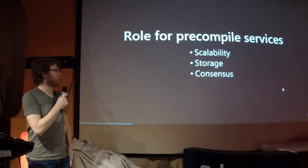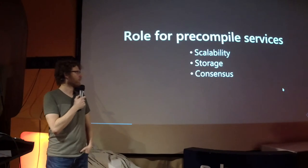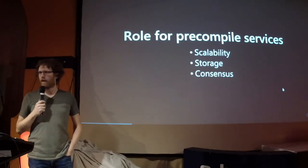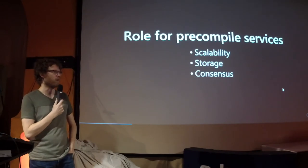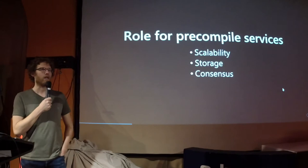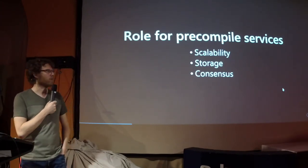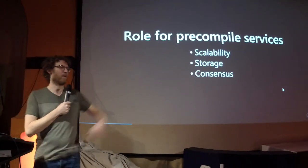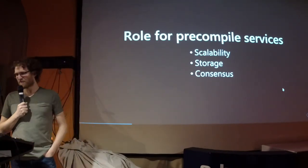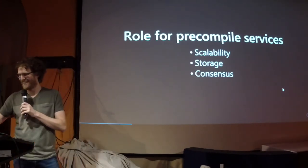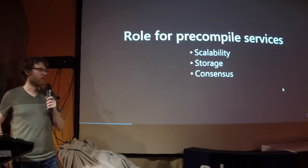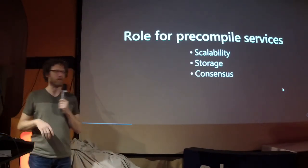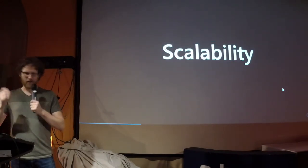We want to explore the idea of giving those services a bit more control over what the client does than regular contracts do. We would like to give them access to the transaction pool, to be able to map memory. There are three main domains where we could actually improve or at least offer something: scalability, of course, because that's what Wasm is here for; storage, because whoever has implemented a client knows that storage is a problem — I'm doing a full sync at home and it's taken three weeks and I'm not even halfway done; and consensus, which is the more science fiction idea.